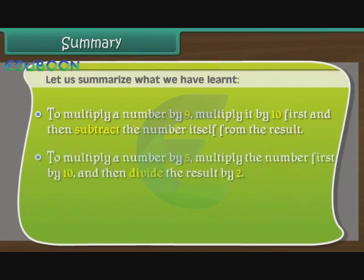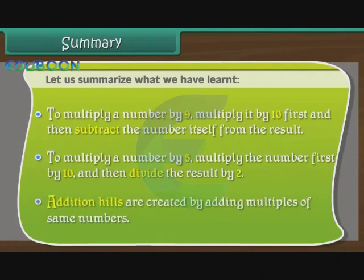To multiply a number by 5, multiply the number first by 10 and then divide the result by 2. Addition Hills are created by adding multiples of same numbers.